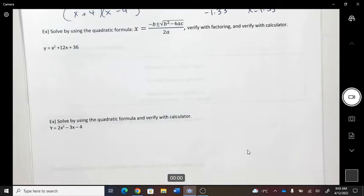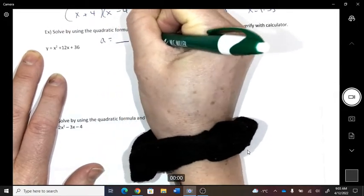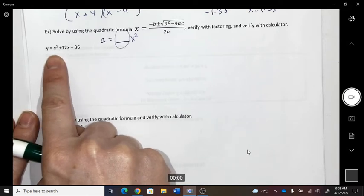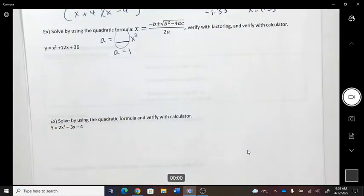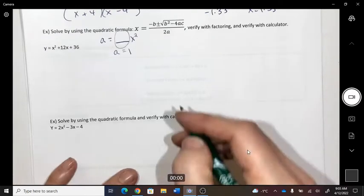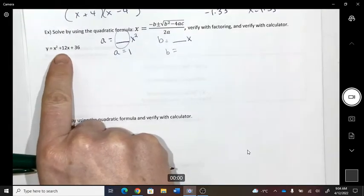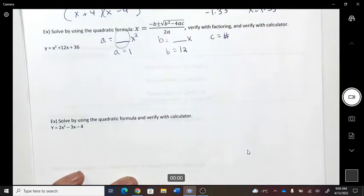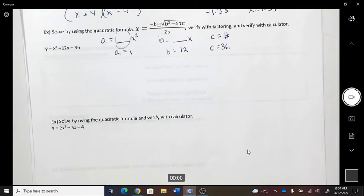Okay, so here we go. Let's try this one. Okay, so when you're looking at this, there's a, b, and a c. So a is how many x-squares? That's what a is. So in this, how many x-squares do you have? One. You have one x-squared, so a is one.